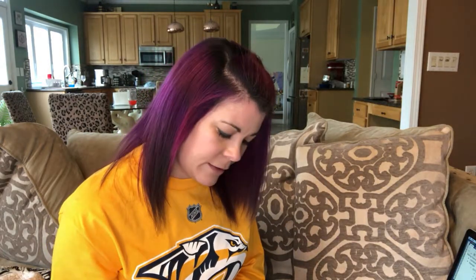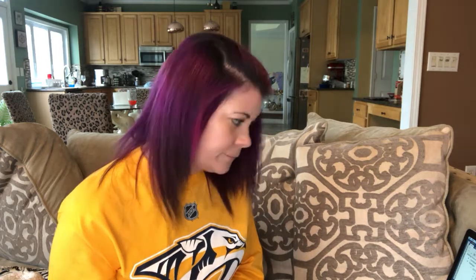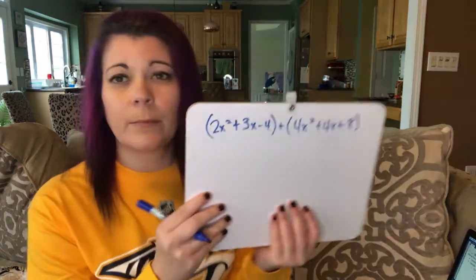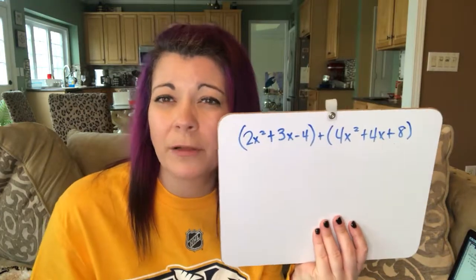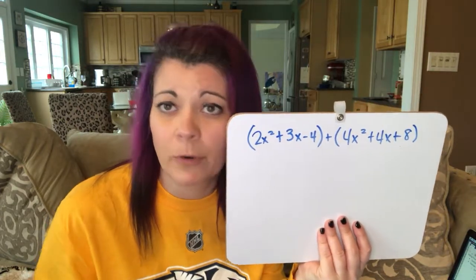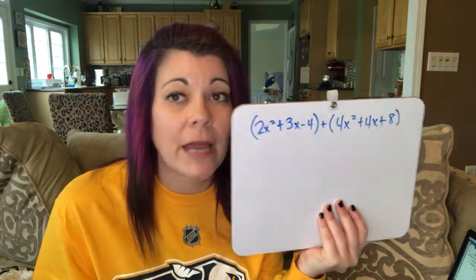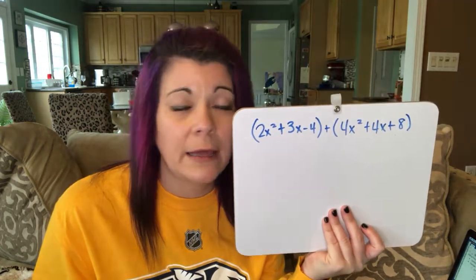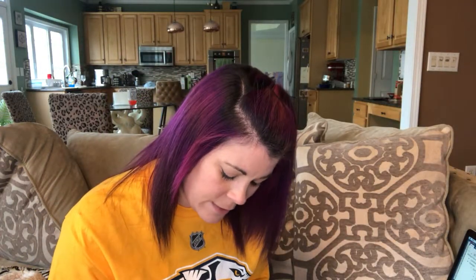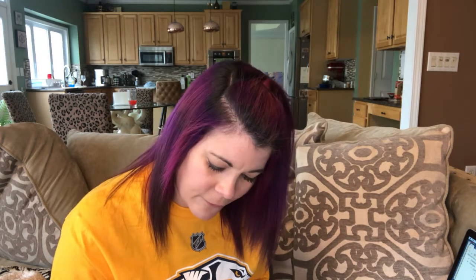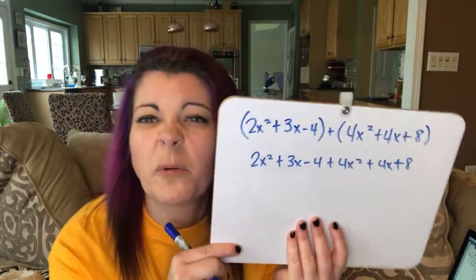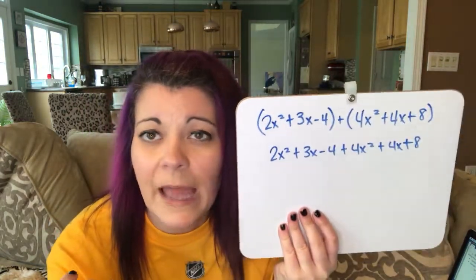Let's do: 2x squared plus 3x minus 4, and then plus 4x squared plus 4x plus 8. So these are polynomials and we're adding them. When adding polynomials, really all you need to do is drop the parentheses and then combine like terms. So we get: 2x squared plus 3x minus 4 plus 4x squared plus 4x plus 8.